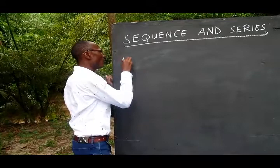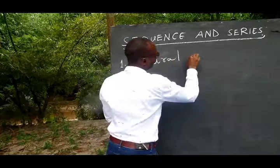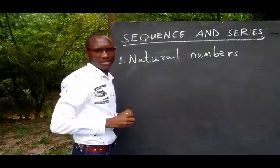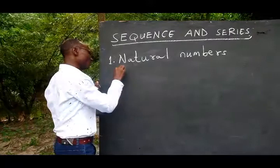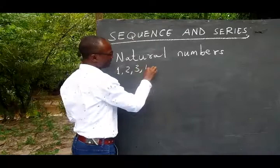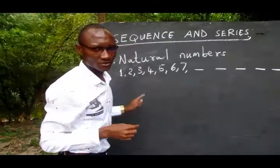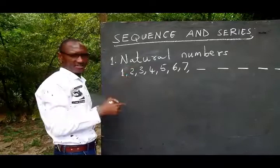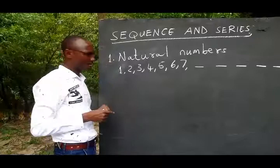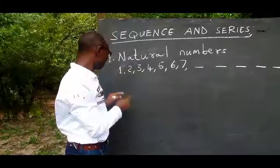For example, natural numbers. Natural numbers are numbers which start from one and continue: 1, 2, 3, 4, 5, 6, 7 and so on. There are so many natural numbers in the world, we cannot finish, but they are in a sequence. They are in a sequence because there is a fixed number which is used to get the next number, to get the afterword number.